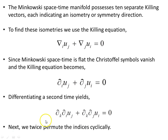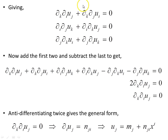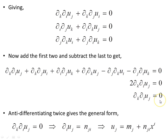Differentiating this expression a second time with respect to k, all the way across, gives us this object. If we next permute the indices cyclically we will have three terms: the original plus two new ones where the indices are permuted cyclically. We add the first two of these together and subtract the last one, giving us this object here.